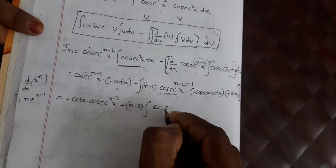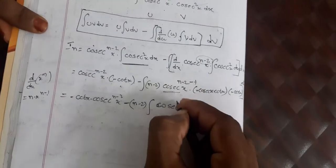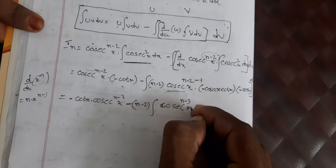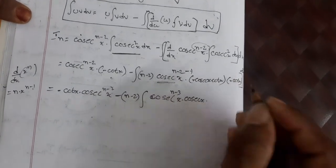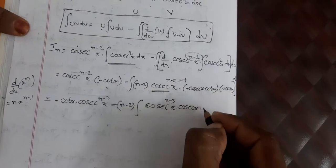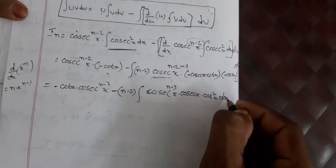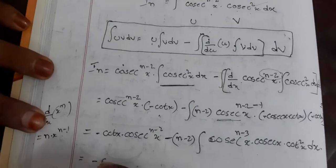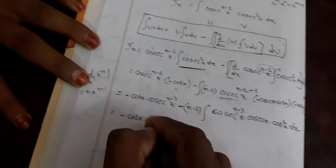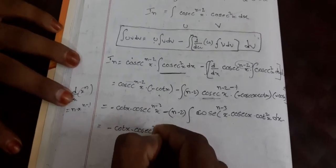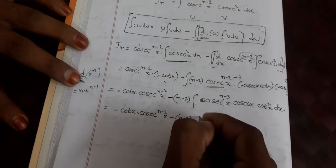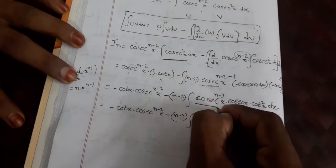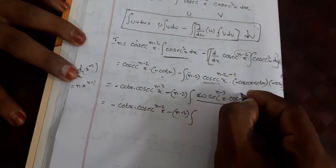Minus of minus gives plus, so we have minus (n−2) outside as a factor, and the integral contains cosecant^(n-3)(x) · cosecant(x) · cot(x) · cot(x) = cosecant^(n-3)(x) · cosecant(x) · cot²(x) dx.